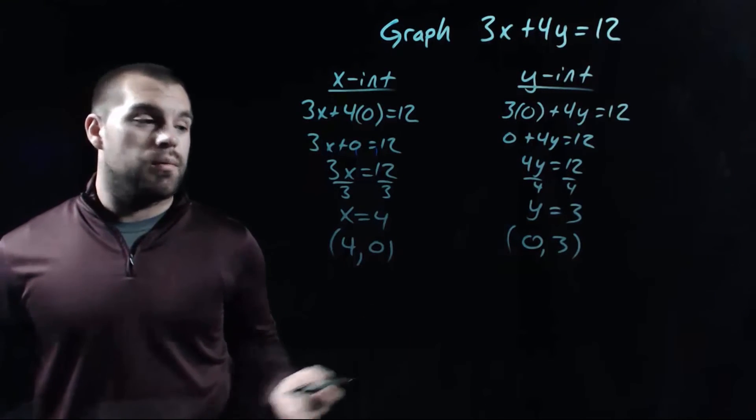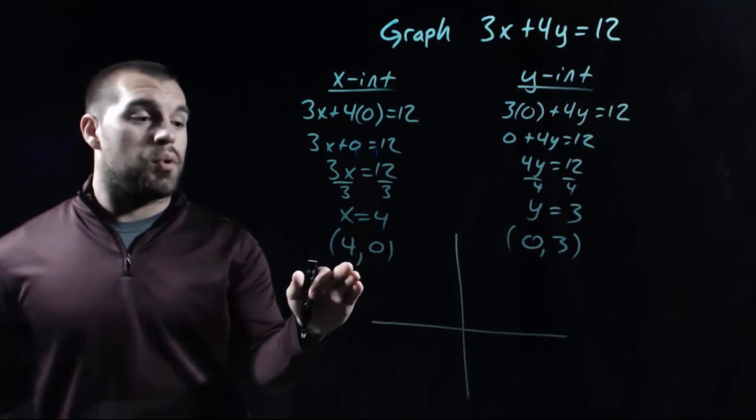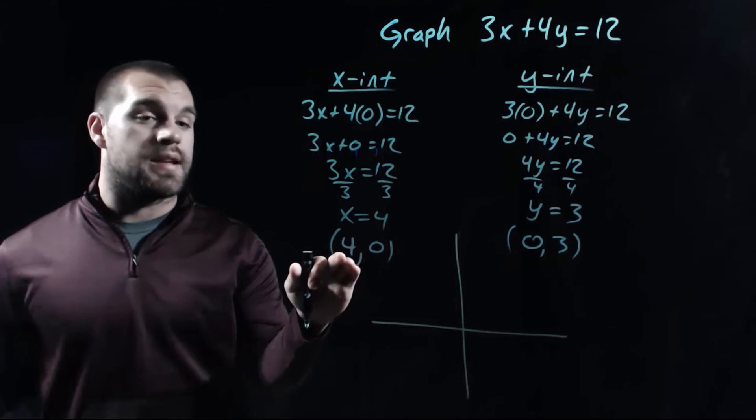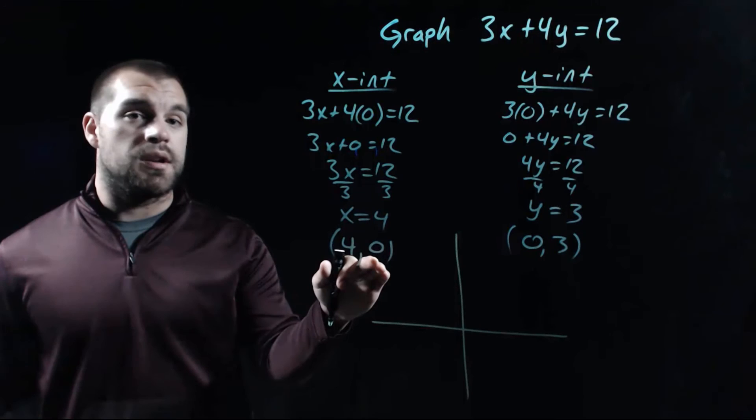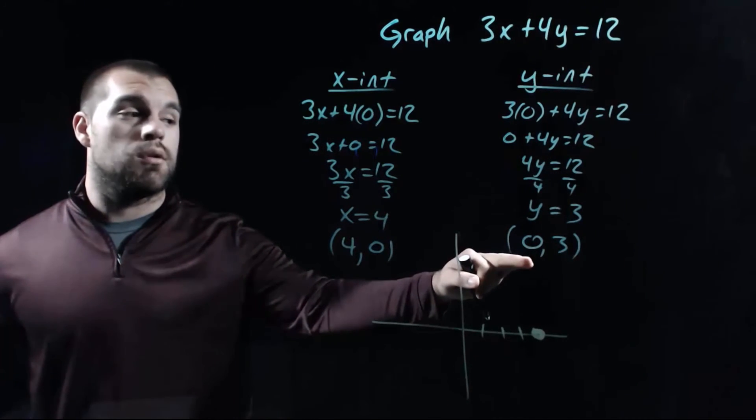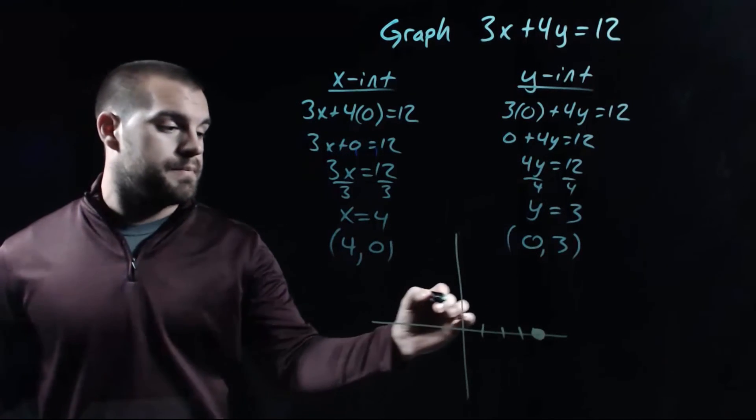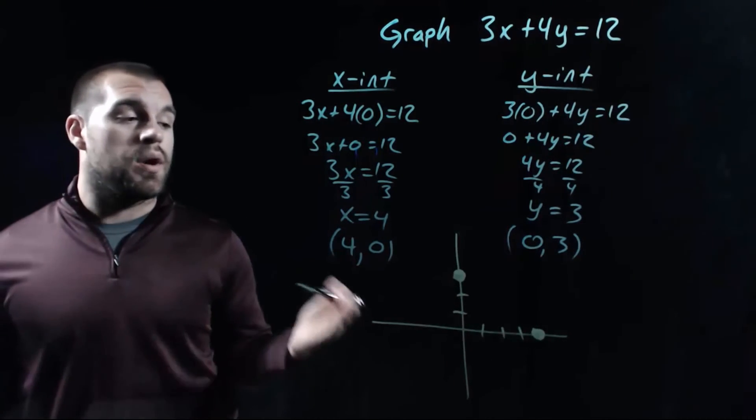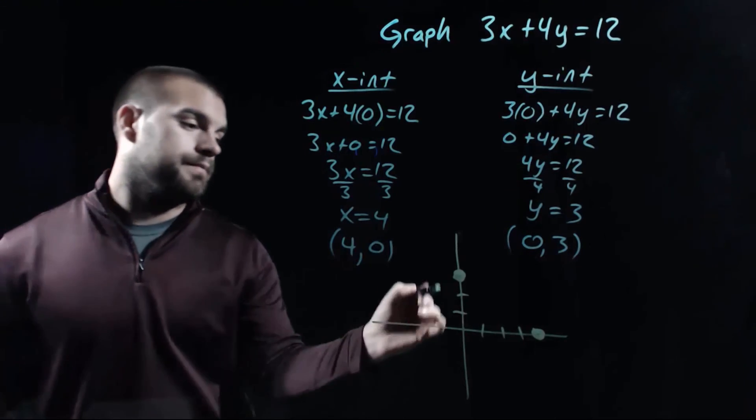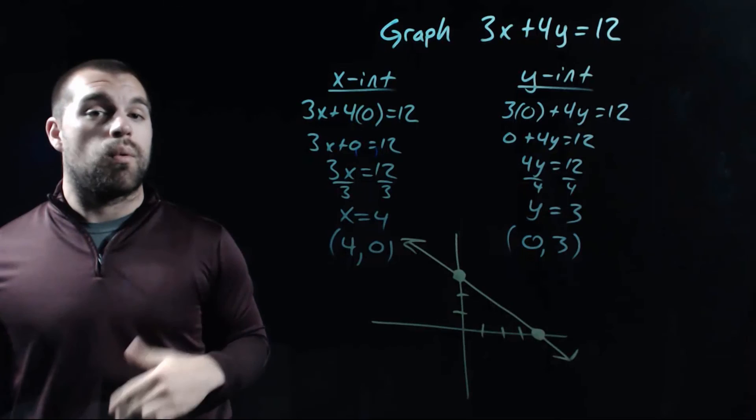Now, in order to graph this out, all we have to do is plot these two points. So the first point is at (4, 0). So that says count to the right four spaces, but don't go up or down at all. Our second point is (0, 3). So it says don't go left and right at all, but go up three spaces. We've got two points. Now all we need to do is draw on the line. So there's the graph for the equation 3x plus 4y equals 12.